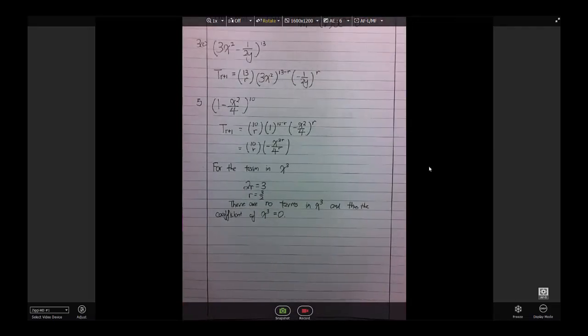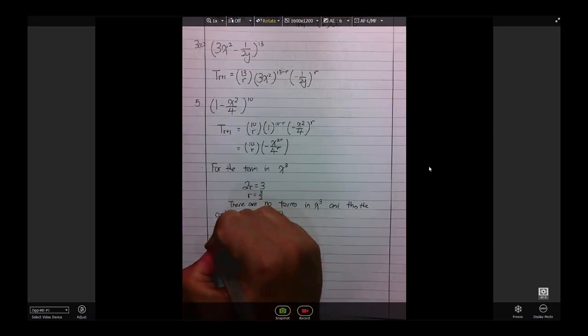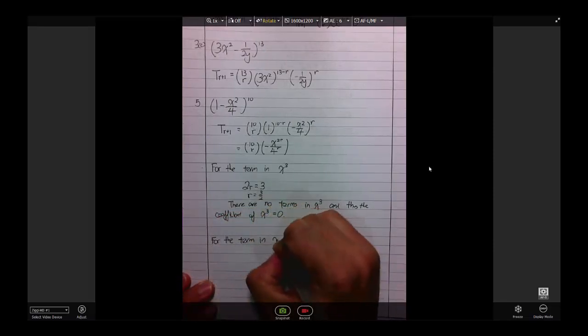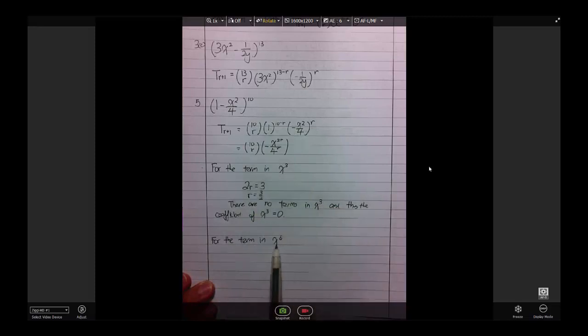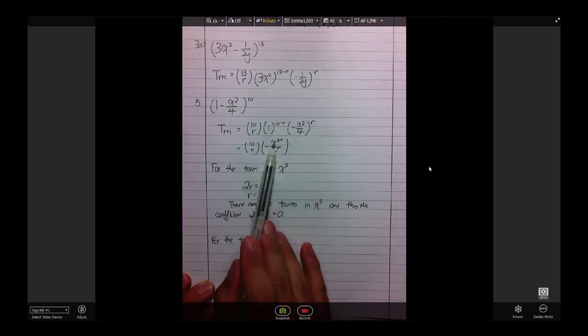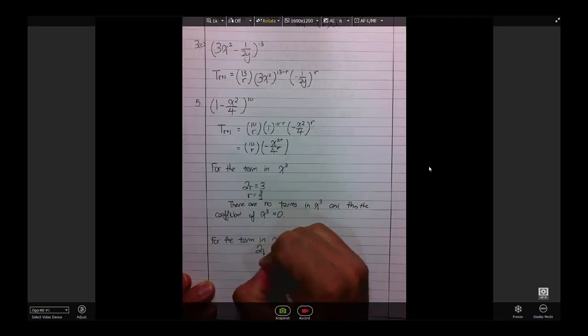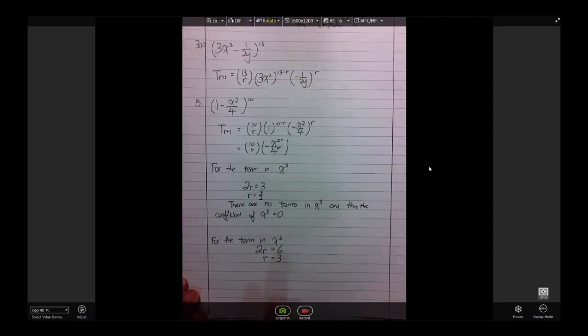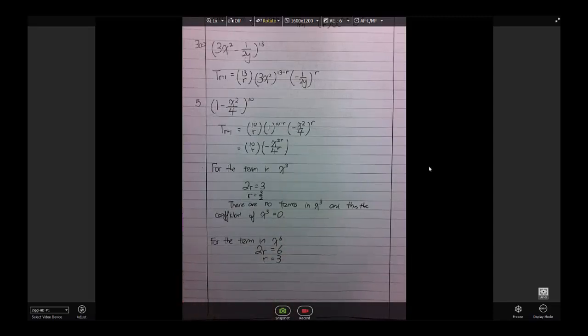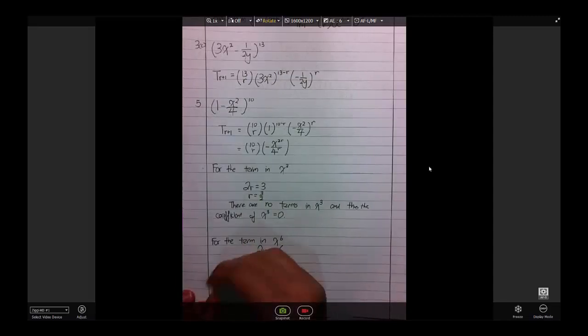Now, similarly, if we want to find the term in x to the power of 6, same idea for the term in x to the power of 6. The only thing that can give me x to the power of something is here, x to the power of 2r, so I say straight away, I say 2r is equals to 6, r equals to 3. In this case, it is possible because we can actually get r equals to 3 is a whole number. So, therefore, I say,